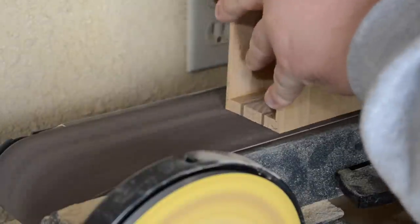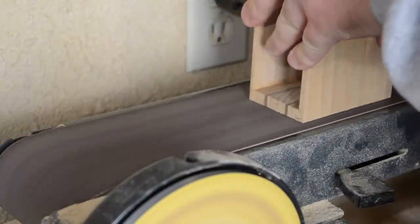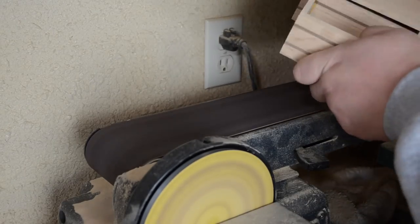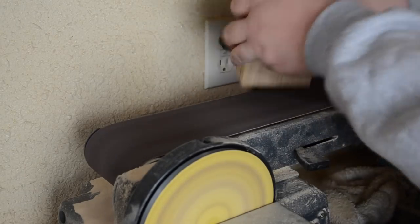Then it was back to the belt sander again to try and make some of the surfaces smooth. Also at this point, I sanded down the inner drawer portion so that it fit nicely in the outer shell.